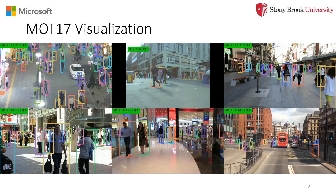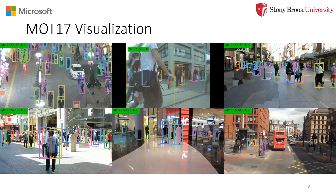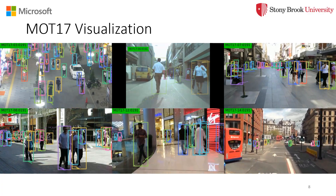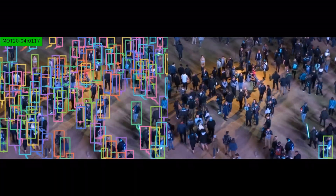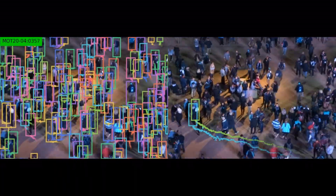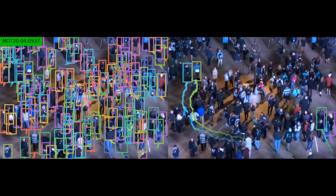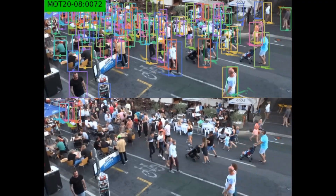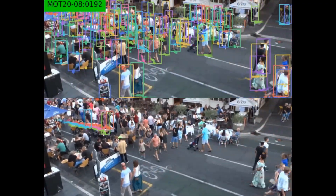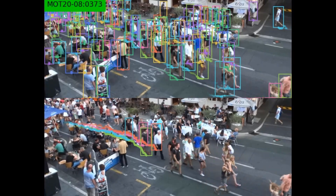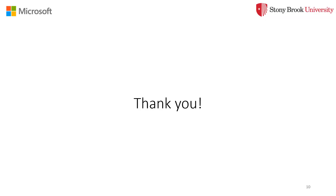We visualized the tracking results from the MOT-17 dataset for six selected videos, and also from the MOT-20 dataset for two selected videos. In order to better illustrate the tracking results, on the right, the result trajectories of four randomly selected targets are also visualized. Thank you.